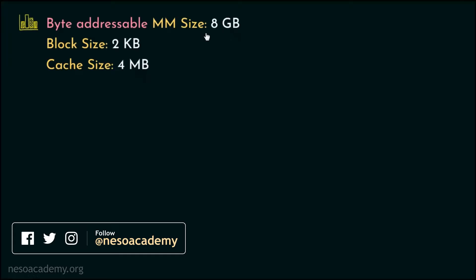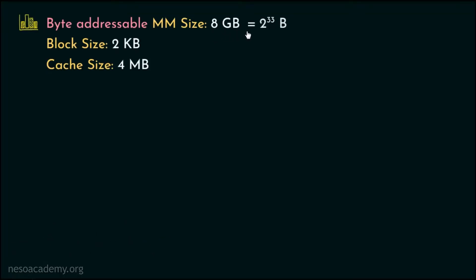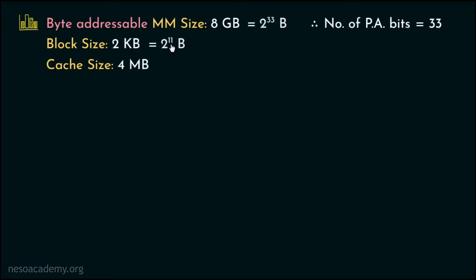Therefore, the main memory size is going to be 2 to the power 33 in terms of bytes, because 8 is 2 cubed and gigabytes is 2 to the power 30. Therefore, for the physical address, we will be needing 33 bits. Now coming to the block size, it is 2KB which in terms of bytes is 2 to the power 11. Therefore, for block offset, we will be needing 11 bits.